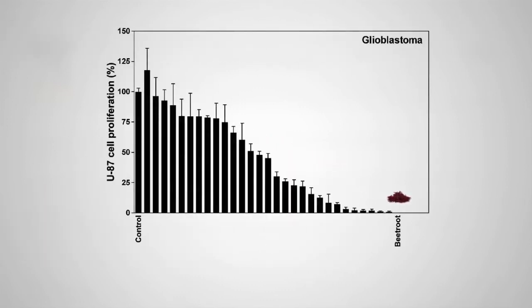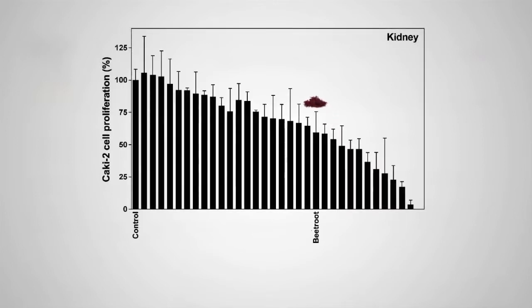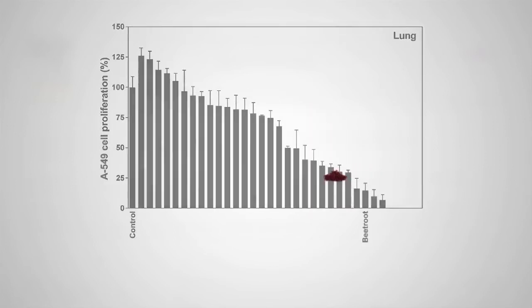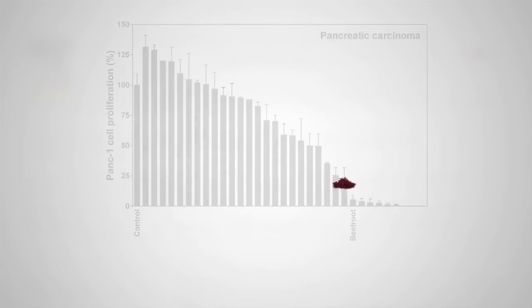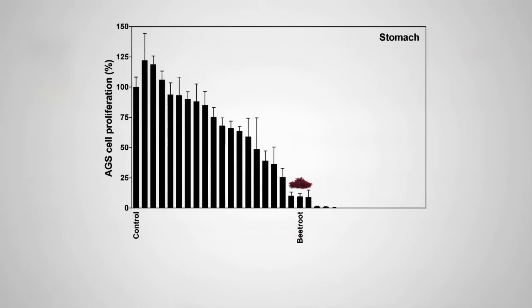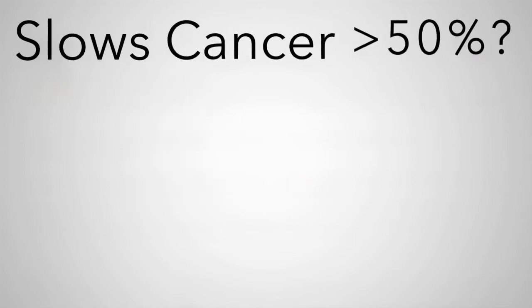What are the benefits of eating vegetables every day? A diet rich in vegetables can lower blood pressure, reduce the risk of heart disease and strokes, prevent some types of cancer, lower risk of eye and digestive problems, and have positive effects upon blood sugar, which can help keep appetite in check.